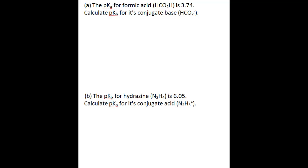In the first part of this problem, you're told that the pKa of formic acid (HCO2H) is 3.74, and you're asked to calculate the pKb for its conjugate base (HCO2-).